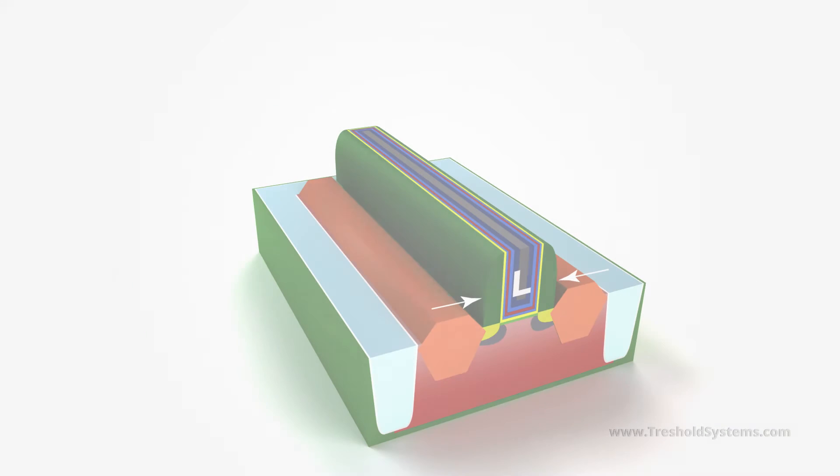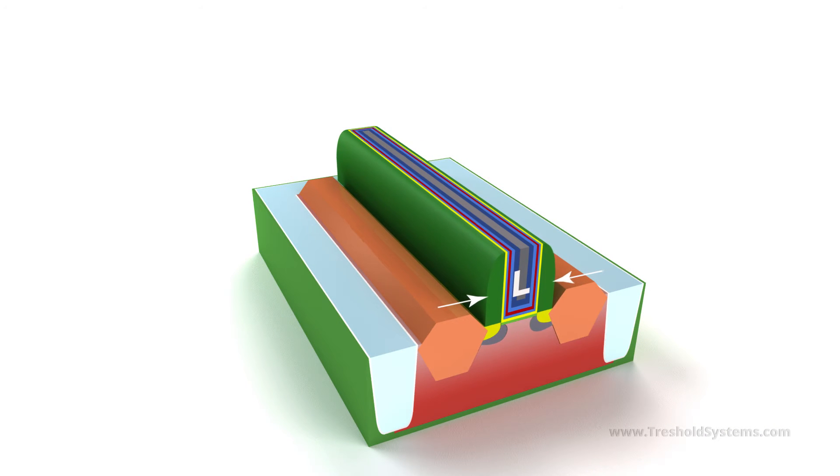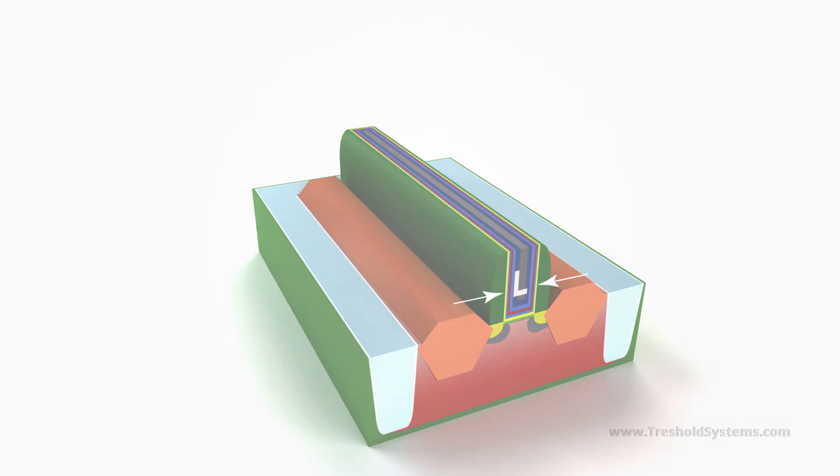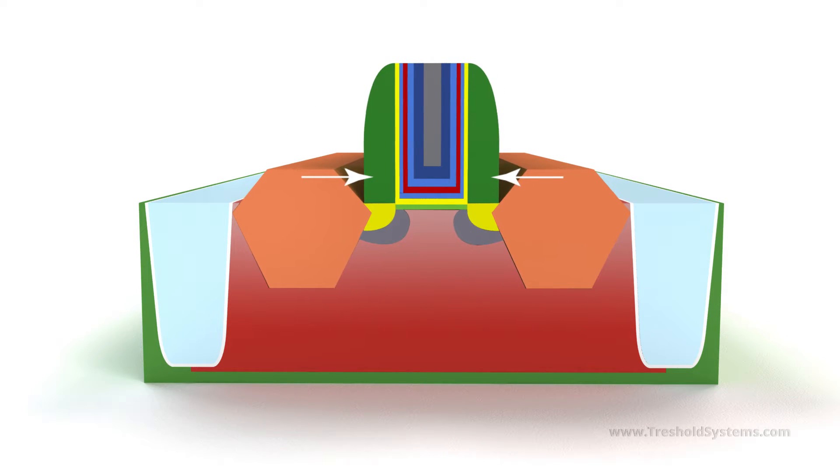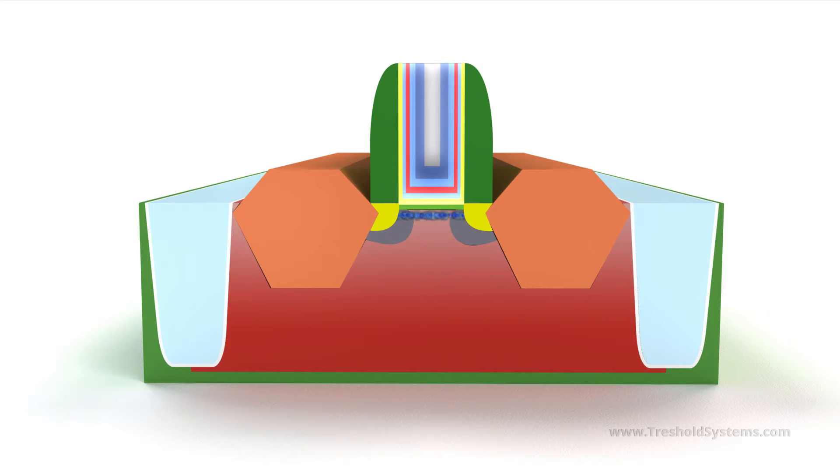However, as the length of the gate electrode is reduced, the control of the gate over the channel region is also reduced as a result of a phenomenon known as drain-induced barrier lowering. This increases source-to-drain leakage and lowers transistor performance.